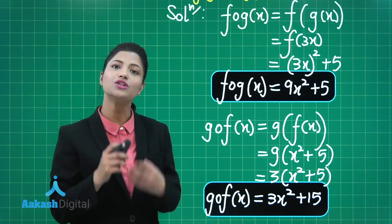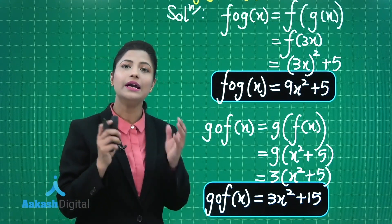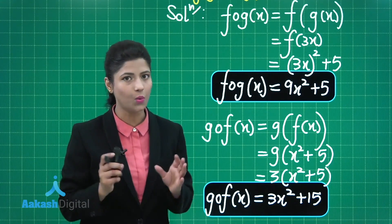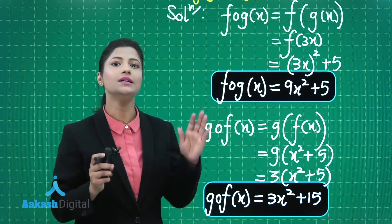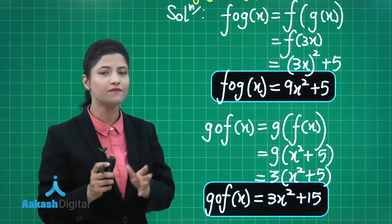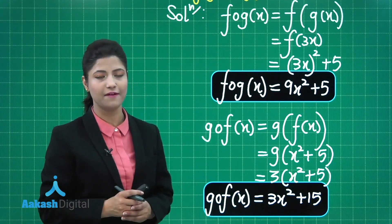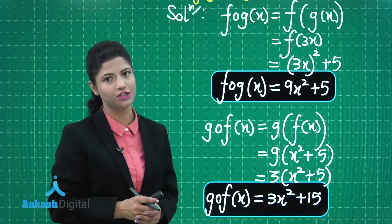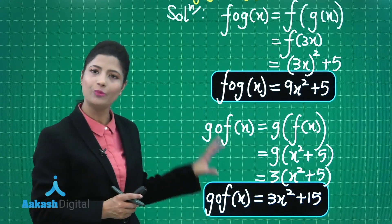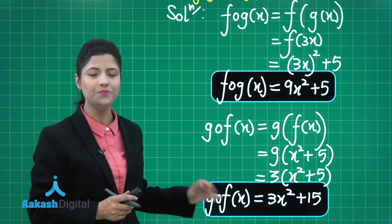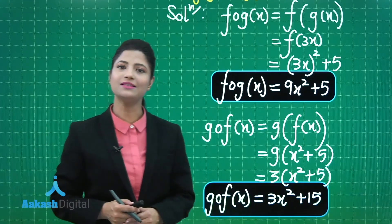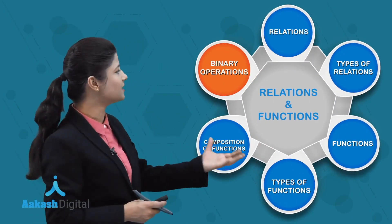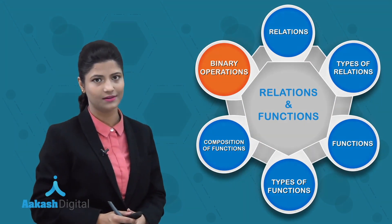The composition G∘F exists and is defined only when the range of function F is a subset of the domain of G. I hope that is clear. Now let's discuss a few more questions based on the composition of functions.